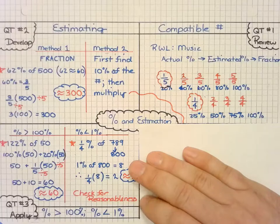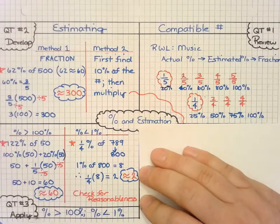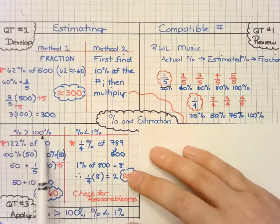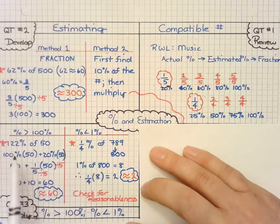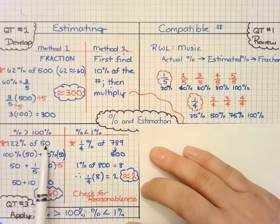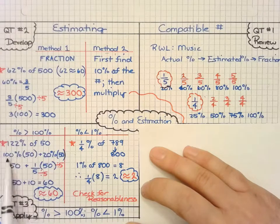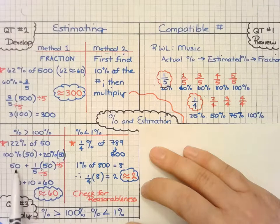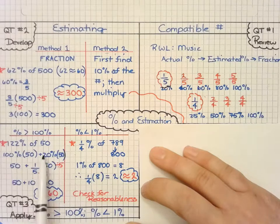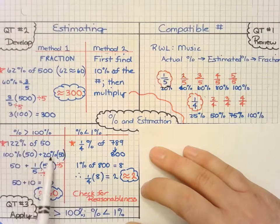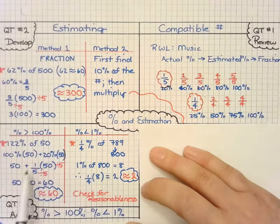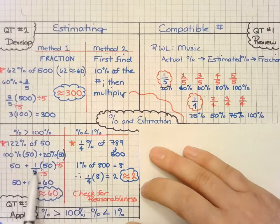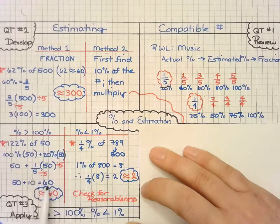Third, we want to be able to use this methodology for percentages that are greater than 100% and percentages that are less than 1%. We have 122% of 50. Well, we can actually break that down into the 100%, which is pretty easy, that's still 50. And then 20%, because that's a lot easier to remember, that's a compatible number. I know that's going to be one-fifth. And I can easily simplify that and get 10.